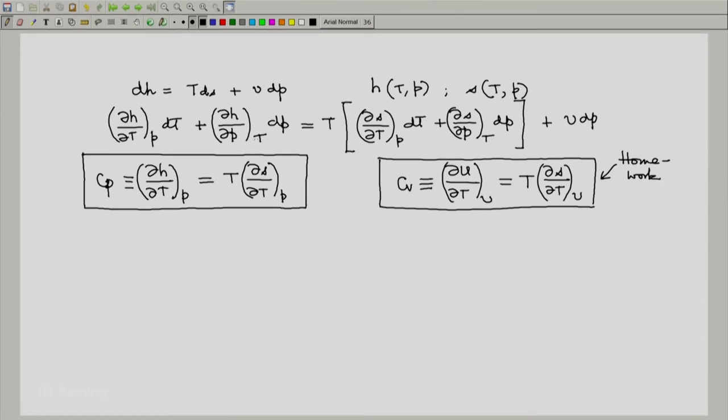Now the second term is also useful. We have coefficients of dP on both sides. Comparing them we get partial of H with respect to P at constant T equals T times partial of S with respect to P at constant T plus V. Notice we have a partial derivative here—let us see whether we can replace it using Maxwell's relation.